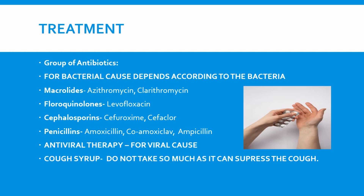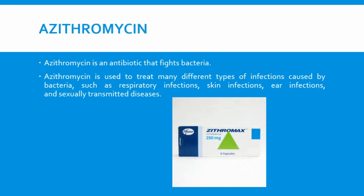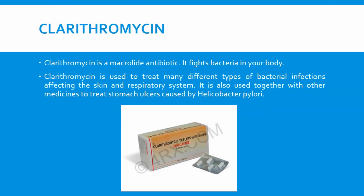Azithromycin is an antibiotic that fights bacteria. It is used to treat many different types of infections caused by bacteria, such as respiratory infections, skin infections, ear infections, and sexually transmitted diseases. Clarithromycin, on the other hand, is a macrolide antibiotic that fights bacteria in your body. It is used to treat many different types of bacterial infections affecting the skin and the respiratory system, and it is also used together with other medicines to treat stomach ulcers caused by Helicobacter pylori.